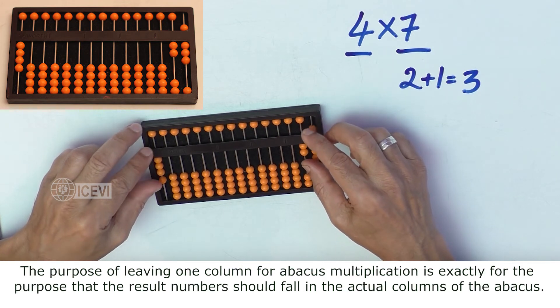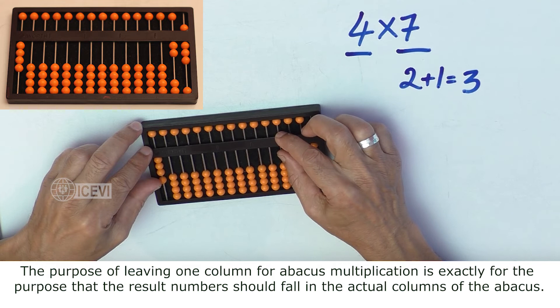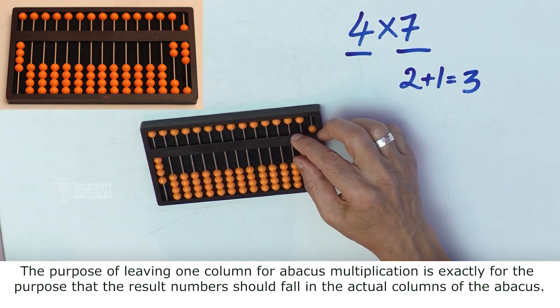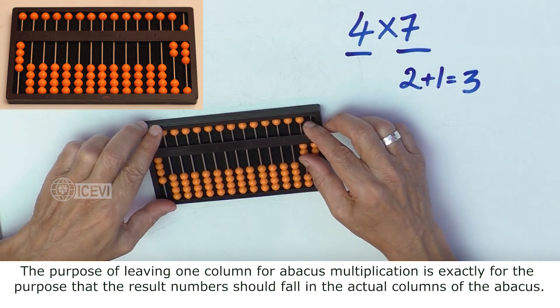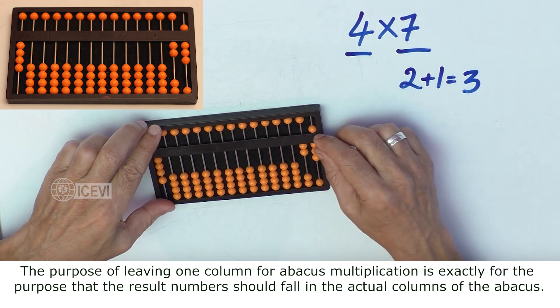The purpose of leaving one column for abacus multiplication is exactly so that the result numbers should fall in the actual columns of the abacus.